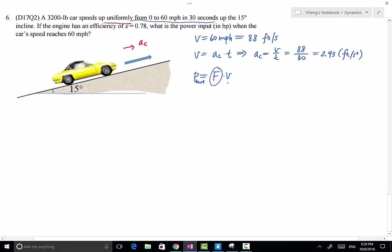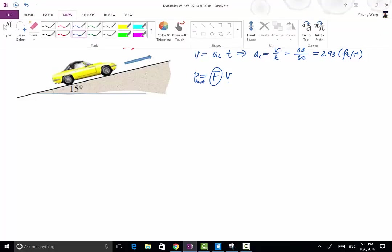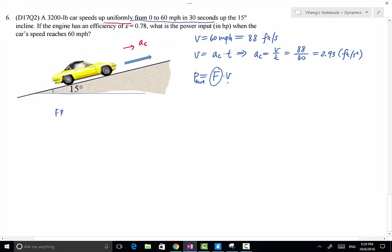And we need to do a force analysis. So we start with a free body diagram of the car. The car is subjected to its weight, and we have this force right here that's pulling the car upwards, provided by the engine. And also it is subjected to a normal force.